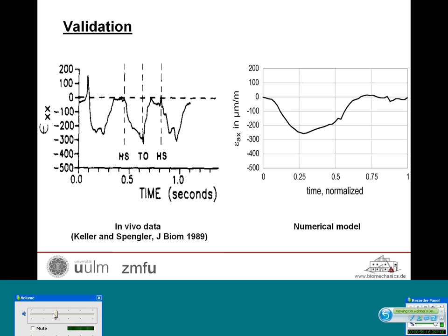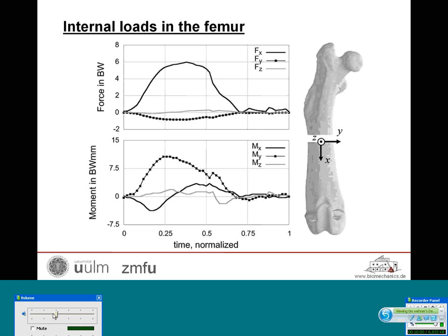The validation results show on the left side the in vivo data from Keller and Spengler — three gait cycles — and on the right side our numerical model showing one gait cycle, with stance phase from zero to approximately 0.65–0.7, followed by the swing phase. Qualitatively, the results fit quite well: there is an increase in axial strains from heel strike with a maximum in late stance, then a drop off after toe-off. Quantitatively, our peak value of approximately 260 microstrain also fits well within the range of the measured in vivo data by Keller and Spengler.